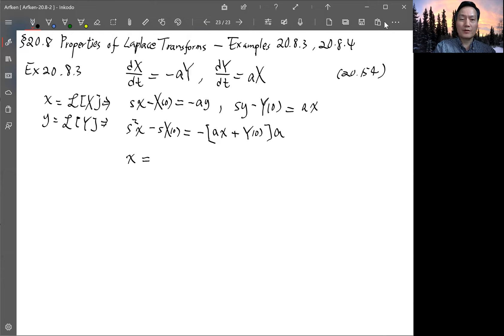So x is, we put everything to the left-hand side. So we have Sx₀ minus ay₀ divided by S² plus A².